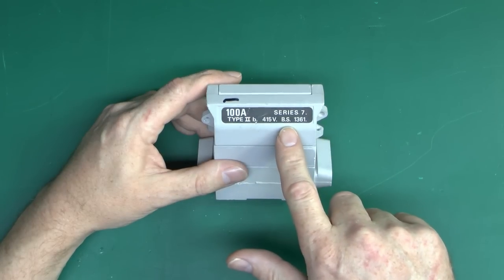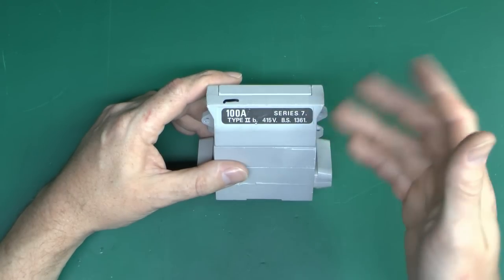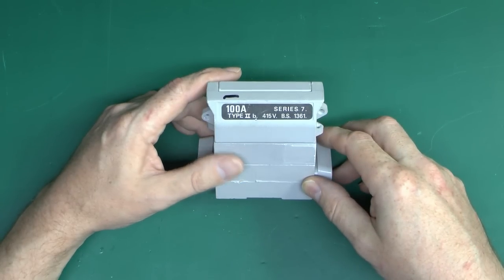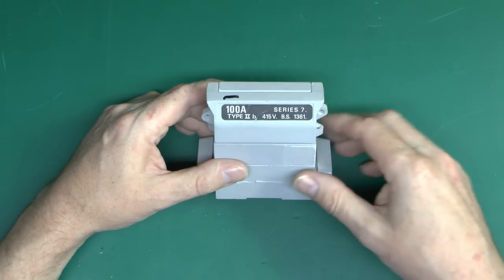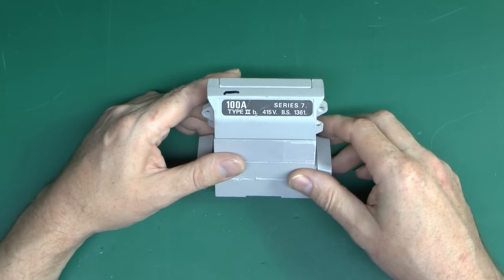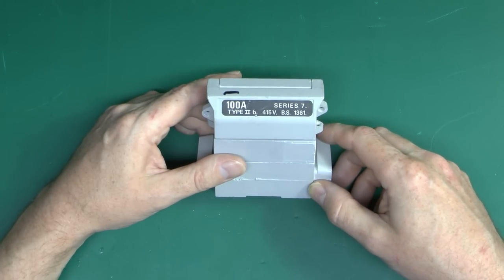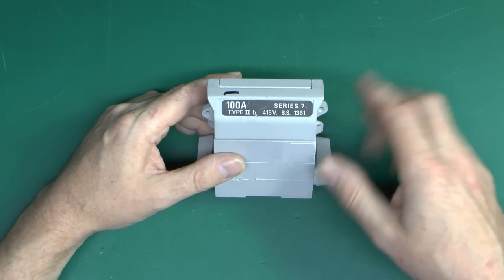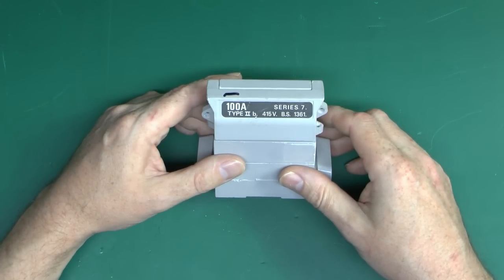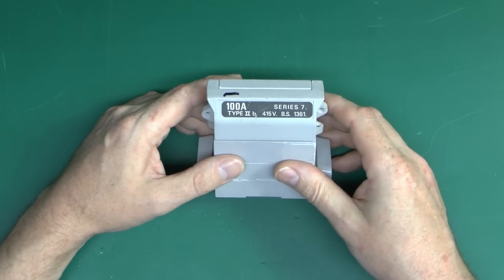This particular one actually has a BS1361 fuse in. That standard is actually now obsolete, it's now BS88 instead, but this being an old one, that was valid at the time. It's also why it says 415 volts rather than the more recent 400. Voltages haven't actually changed, it's just the definitions in various documents that did.